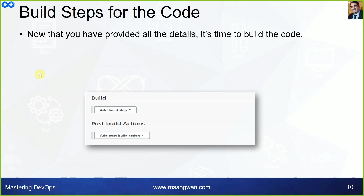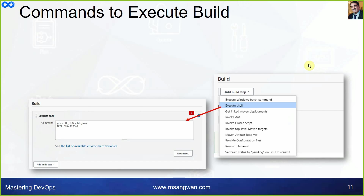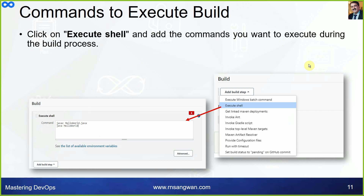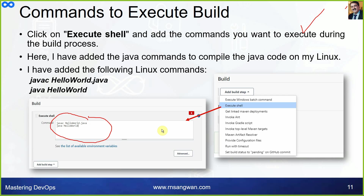Now that all details are provided, it's time to build the job. Tweak the settings under Build Action — you can schedule the build periodically or trigger it on code changes. Under Build, click Add Build Step. In our case it was a simple Java program, so we used Execute Shell and added the commands: 'javac HelloWorld.java' to compile, and 'java HelloWorld' to run the program.